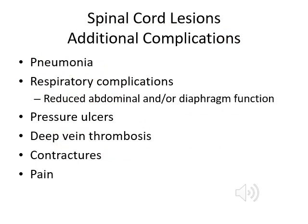Other complications include pneumonia — especially in quadriplegic patients who don't have full diaphragm function — along with respiratory complications, pressure ulcers if the patient isn't turned regularly, and deep vein thrombosis due to inability to move the legs. Contractures also develop over time as connective tissues within the muscle become very tight, decreasing range of motion. Pain is another complication of spinal cord lesions.